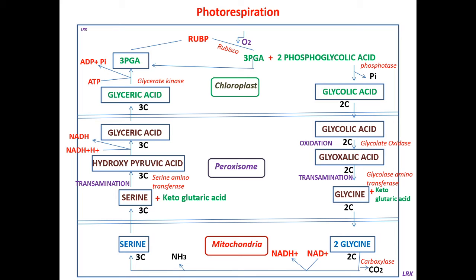The enzyme RuBisCO — ribulose bisphosphate carboxylase oxygenase — when the concentration of carbon dioxide is more and availability of oxygen is less, it follows the path of C3 cycle. But if the concentration of oxygen is more and concentration of carbon dioxide is less, then this RuBisCO will go for oxygen instead of carbon dioxide. Then instead of forming two PGA molecules, it forms one PGA molecule and one phosphoglycolic acid molecule.